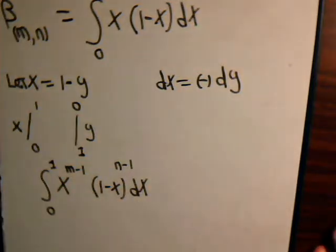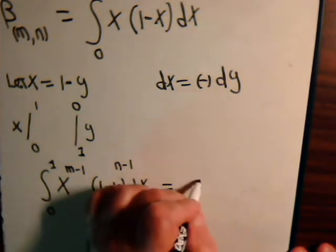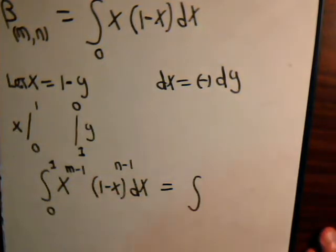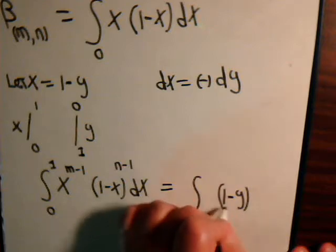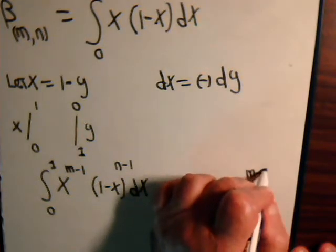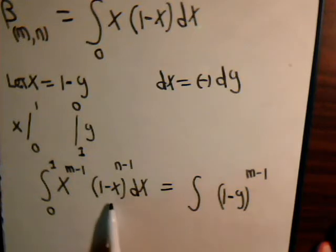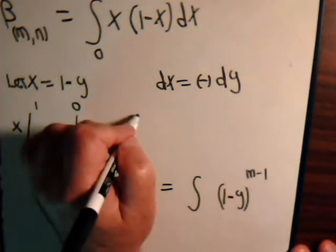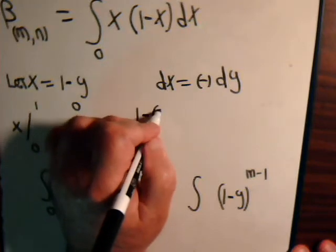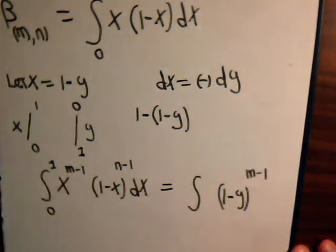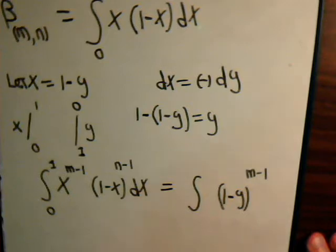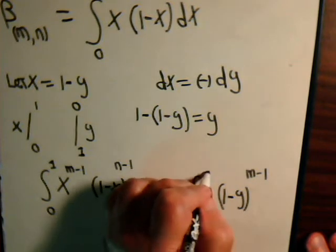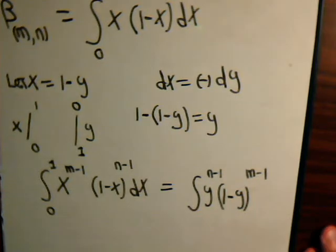And now let's make our variable change. This will equal the integral, x is (1 minus y), so you have (1 minus y) to the (m minus 1) power. And (1 minus x), that's going to be 1 minus (1 minus y), and that equals y, so this gives us y to the (n minus 1) power.